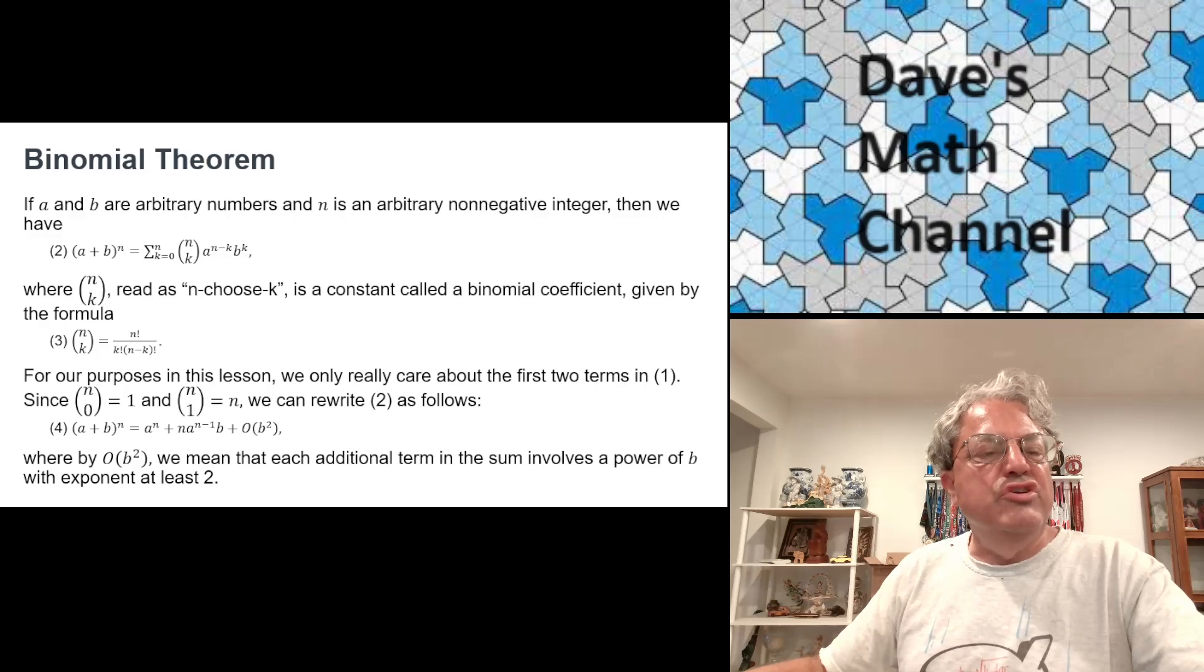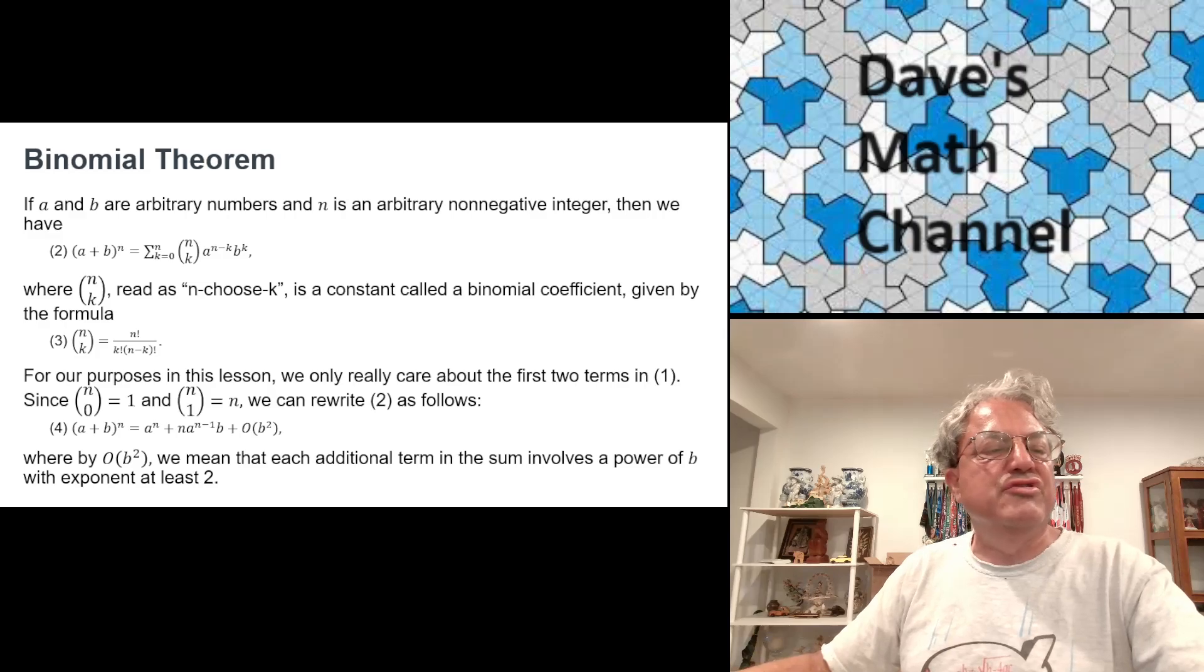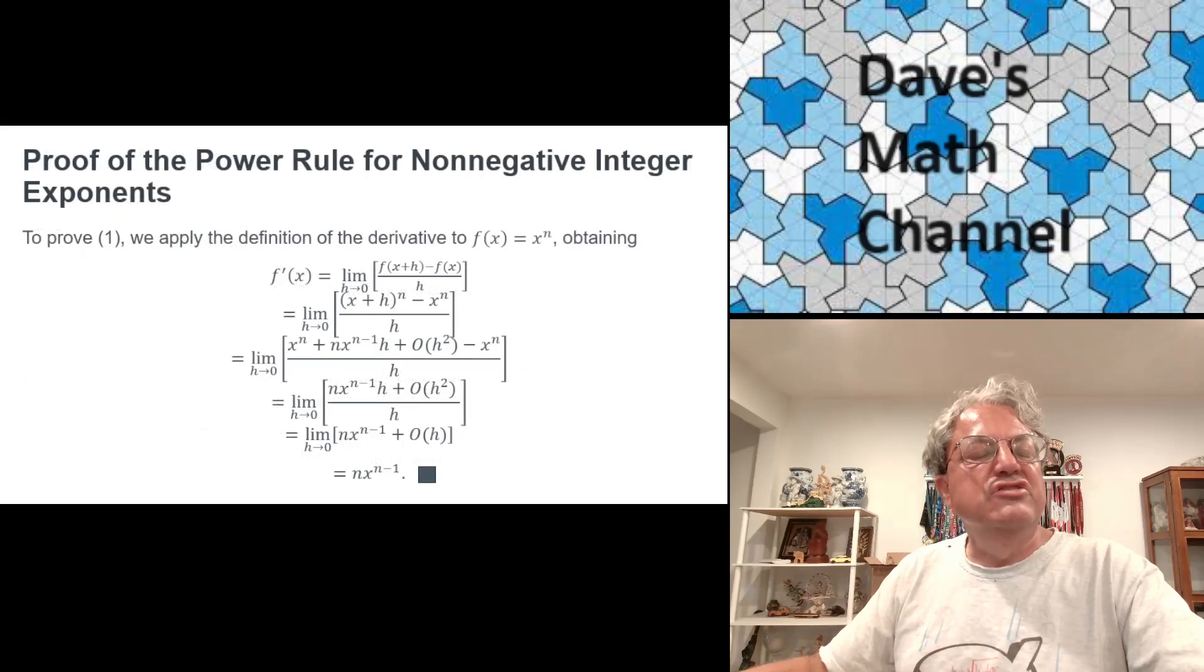For all the other higher order terms, what we note is that they all involve powers of b that are at least 2. As it turns out, we're going to be able to ignore those terms. We don't really need them. So we can simplify the binomial theorem with equation 4 just as a plus b to the nth power is a to the n plus n times a to the n minus 1 times b plus, and then I write this thing called big O. This is big O notation. Don't worry about this too much if you haven't seen it. But it's big O of b squared. What that really means is we can ignore all powers of b that are less than b squared in this case. The result just depends on powers of b that are at least 2. And if b is small, then it's going to go like b squared, which is even smaller than b. And b is actually going to be h, the thing we're letting go to zero.